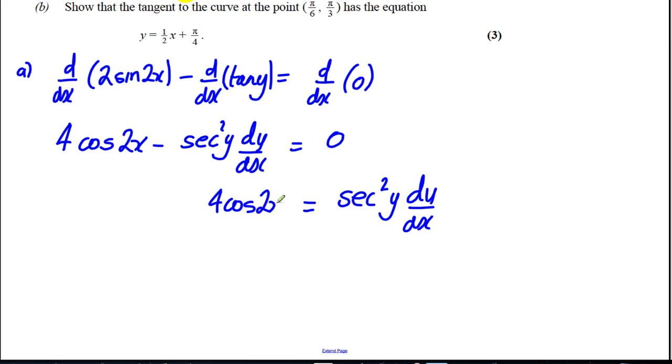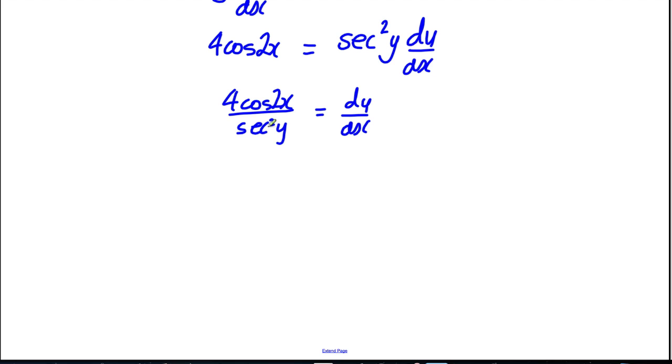And therefore dy over dx is going to be equal to 4 cos of 2x over sec squared y. And 1 over sec squared is cos squared, so dy/dx is going to be 4 cos 2x cos squared y and we're done.